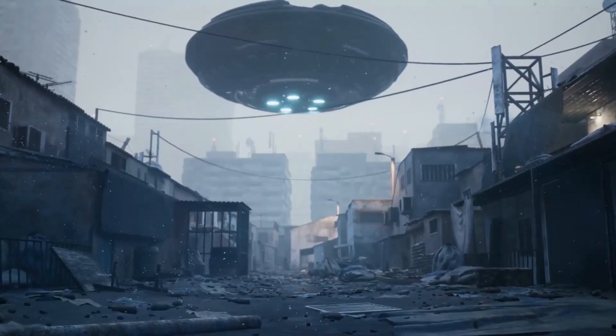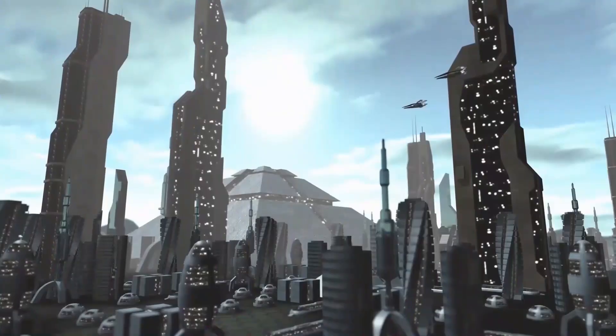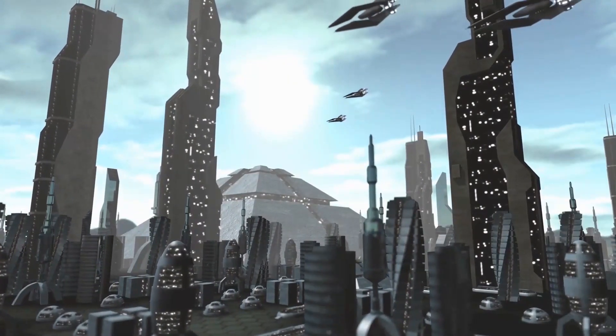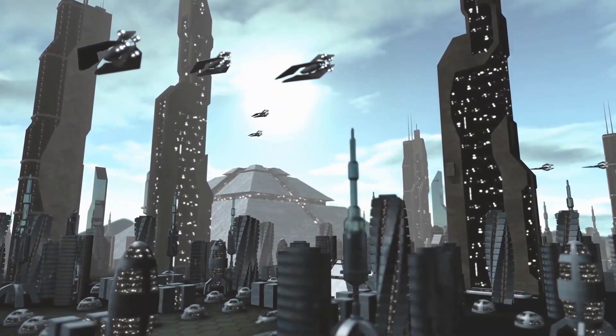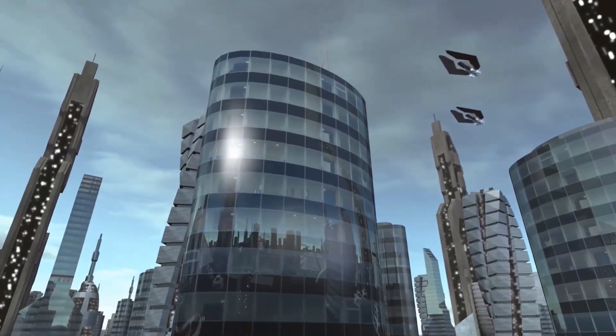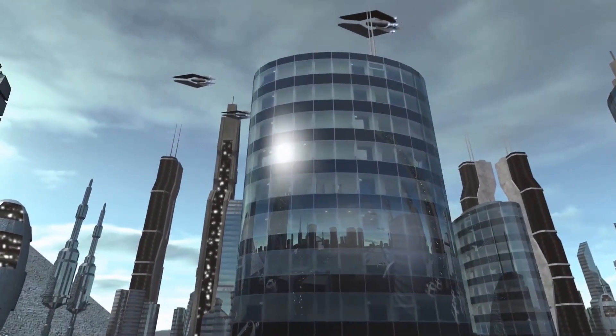Detecting an ecumenopolis version of Proxima b would be easy for next-generation telescopes. We could detect just 0.5% urbanization of the planet. That's still 10 times more than Earth's present urbanization. However, current city growth rates put the Earth at 0.5% within the next 100 years, a blink in stellar time.